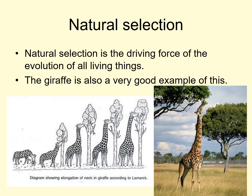Natural selection is the driving force of the evolution of all living things. That peppered moth is a very good example where you can see natural selection over quite a short period of time. The giraffe however is another very good example of natural selection, but over a much longer period of time — millions of years. Originally the giraffe would not have had a long neck; it would have had quite a short neck, but over many different generations it would have developed a longer and longer neck.